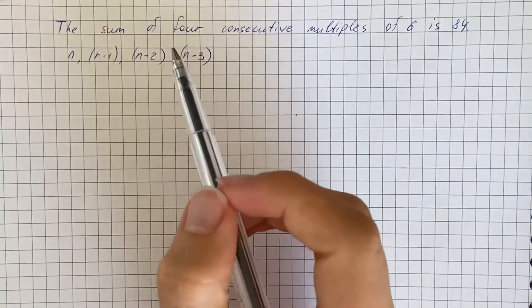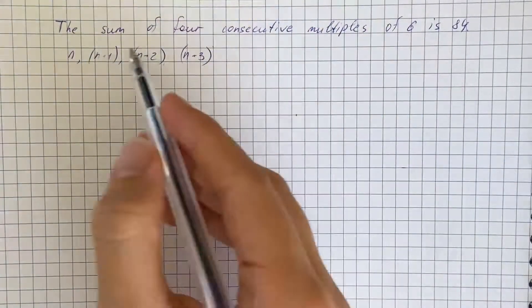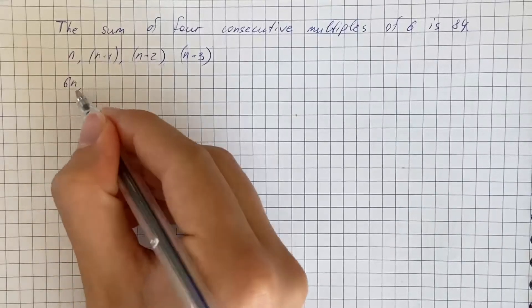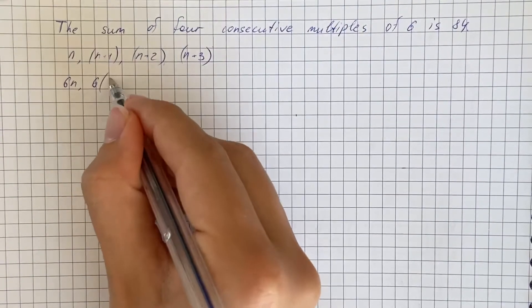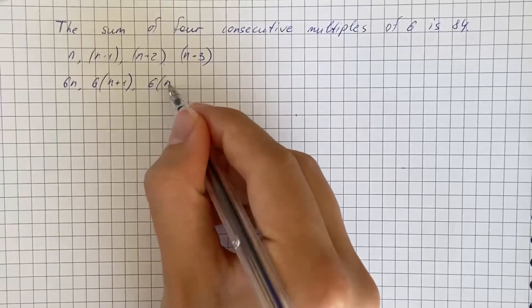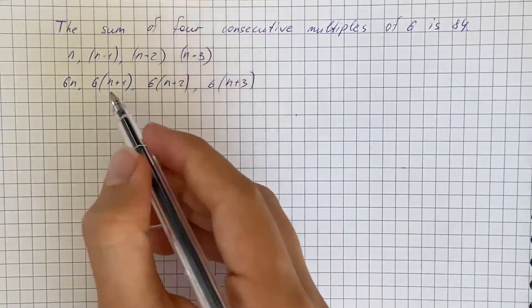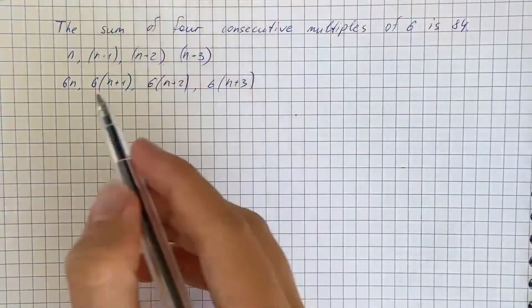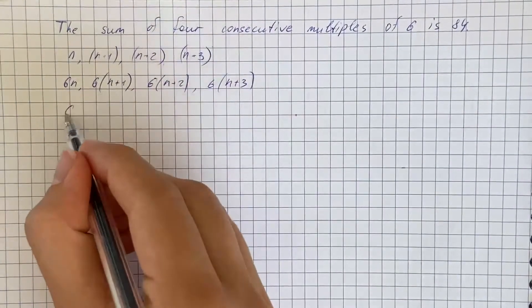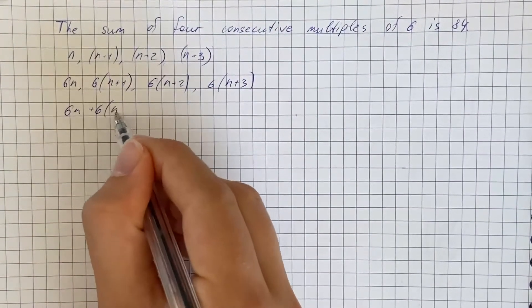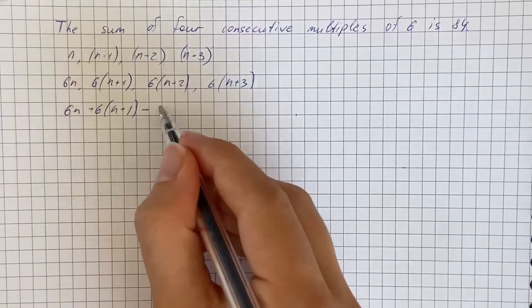But they are multiples of 6, so they should be 6n, then 6 times n plus 1, then 6n plus 2, and 6n plus 3. Then according to the question, the sum of these multiples equals 84.